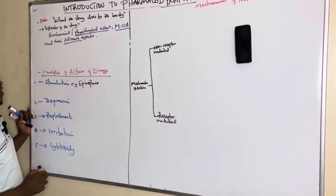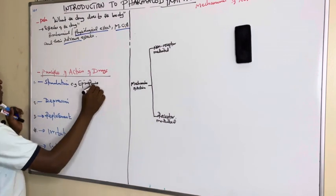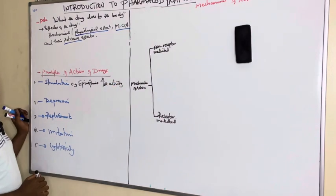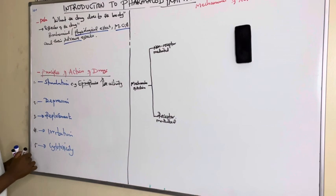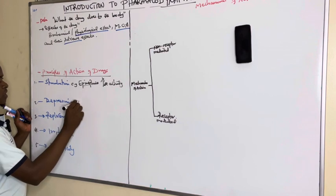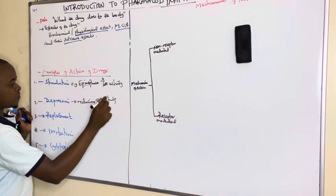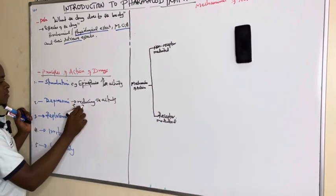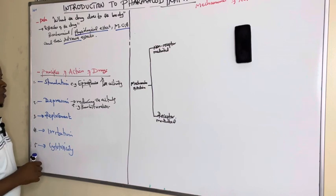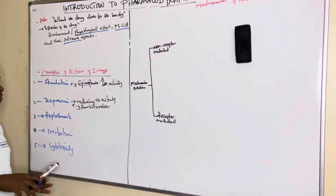Some drugs act by stimulating cells in the body. For example, epinephrine, when it binds to the beta receptors, stimulates or increases the activity of the cells where it binds. Other drugs act by reducing the activity of the cell — those drugs include barbiturates like phenytoin and phenobarbital, which when they bind on the receptors deplete the activity of the cell.